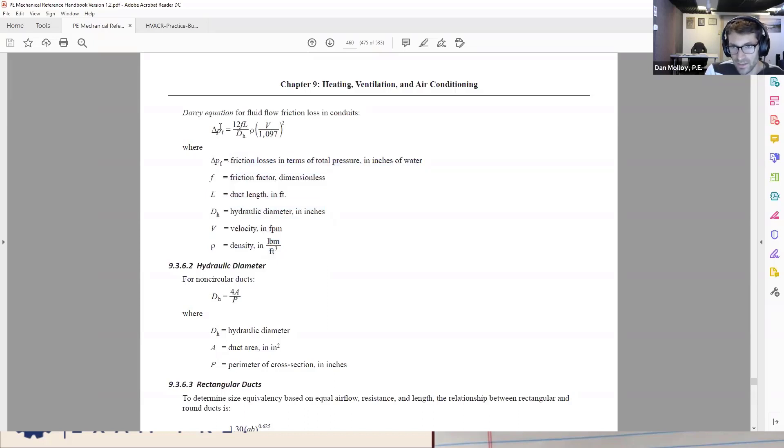And provided we do that, the answer kind of magically comes out to inches of water, which wouldn't necessarily be the case if we didn't do a bunch of unit conversion along the way. So the name of the game becomes: we're going to put in a dimensionless friction factor, a duct length in feet, a hydraulic diameter in inches. And as long as we follow all these rules with the units on the input side, it should theoretically come out to give us inches of water for that friction loss.